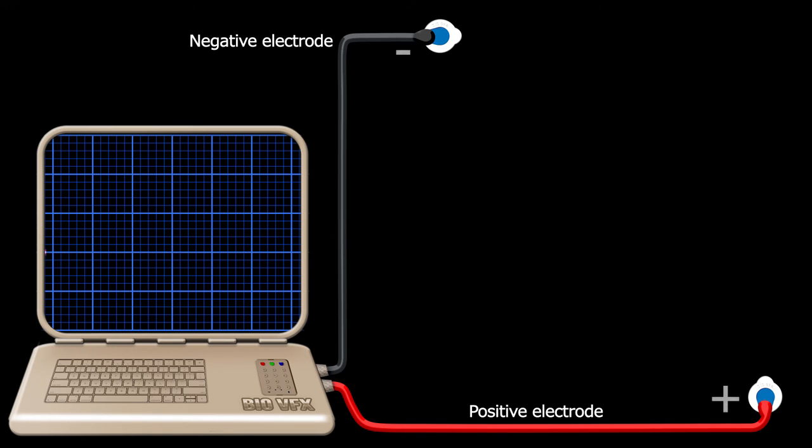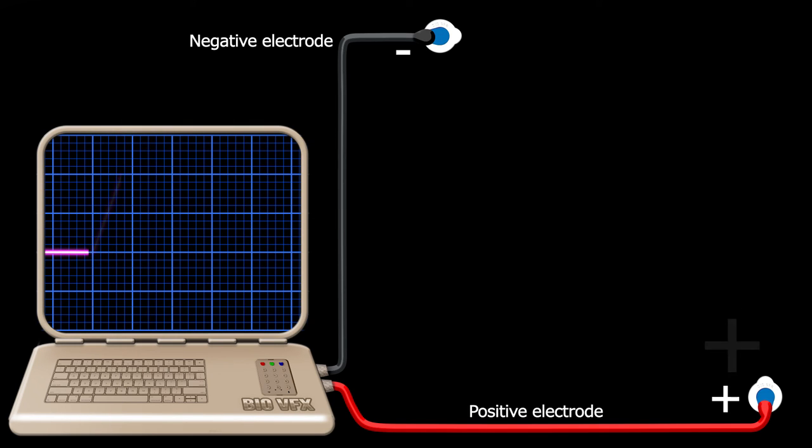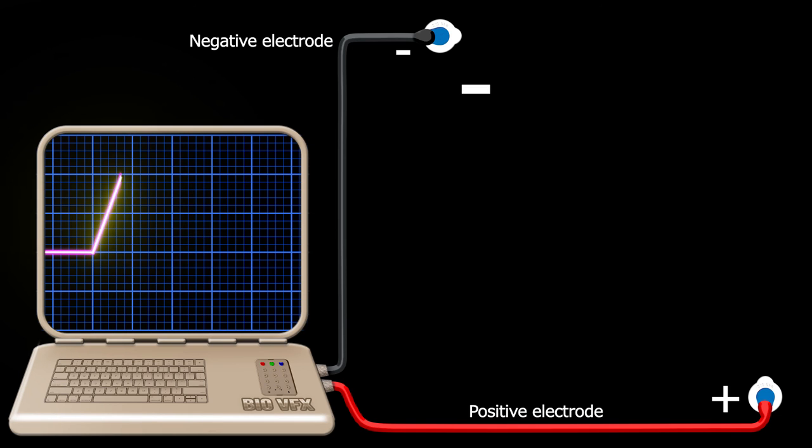The ECG machine graphically interprets electrical current moving from the negative electrode to the positive electrode. So, when a positive current is moving towards a positive end of the ECG machine, a positive deflection occurs. When a positive current moves towards the negative electrode, the ECG machine shows as a negative deflection. But when a negative current moves towards a negative electrode, a negative and a negative equals a positive. This concept may take a few times to understand.